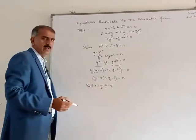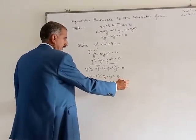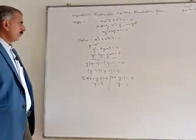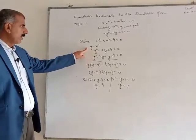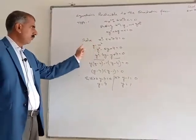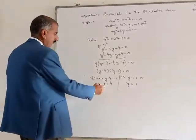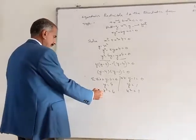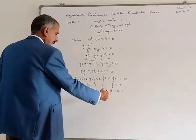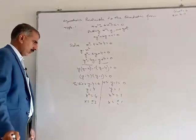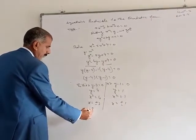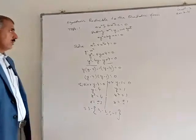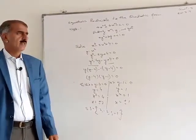So y minus 4 is equal to 0 or y minus 1 is equal to 0, giving y equal to 4 or y equal to 1. Now back to the supposition: y equal to x squared. So x squared equal to 4 gives x equal to plus or minus 2, and x squared equal to 1 gives x equal to plus or minus 1.